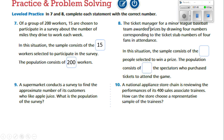Let's try number eight now. The ticket manager for a minor league baseball team awards prizes by drawing four numbers corresponding to the ticket stubs of four fans in attendance. The sample consists of the four people selected. The population consists of all of the spectators who purchased tickets at the game. He only went ahead and drew four numbers out of all the people that were there. All the spectators would be the population and four would be the sample.